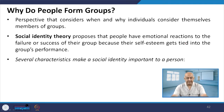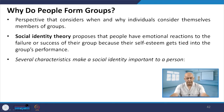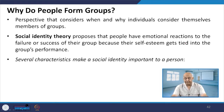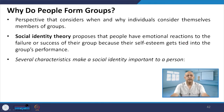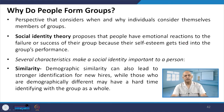Perspectives that consider when and why individuals consider themselves members of a group are important here. Social identity theory proposes that people have emotional reactions to the failure or success of their group because their self-esteem gets tied into the group's performance. For example, being a board member, a task force member, or a quality circle member gives social identity, because only those with subject knowledge can become members.